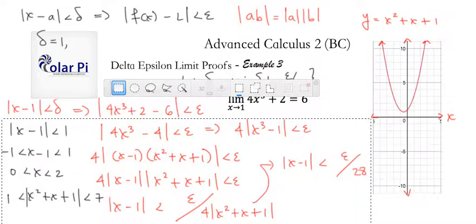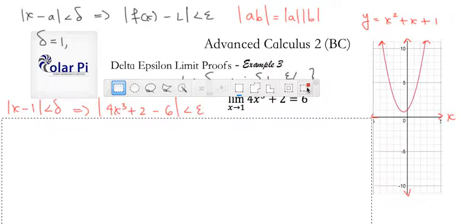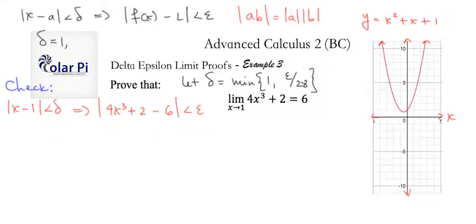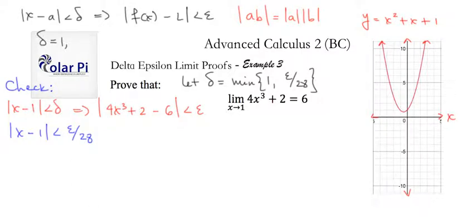For your given epsilon, checking we've gotten the correct delta means that whenever absolute value of x minus 1 is less than delta, we need to imply absolute value of 4x cubed plus 2 minus 6 is less than epsilon. If absolute value of x minus 1 is less than delta, notice that x minus 1 is less than epsilon over 28, because we just said delta is epsilon over 28. Then the following is true: 28 times absolute value of x minus 1 is less than epsilon.